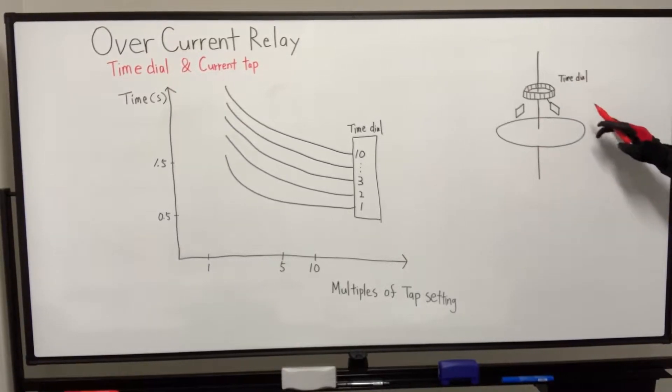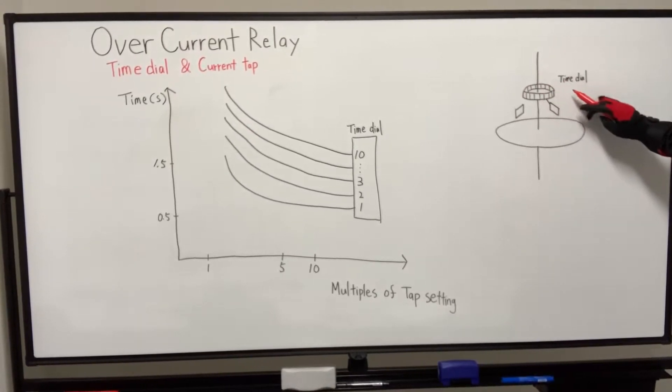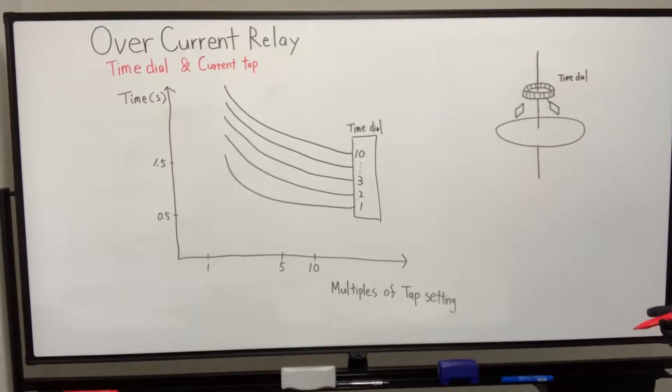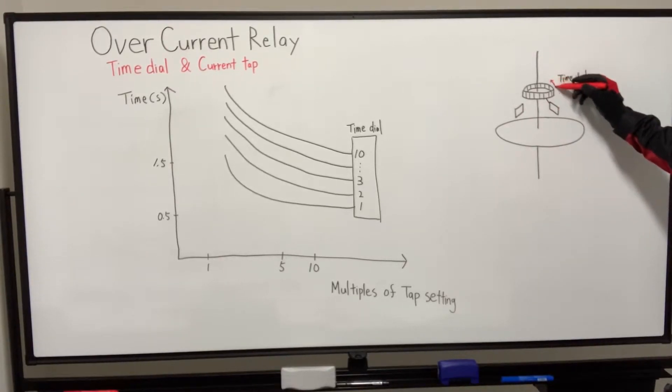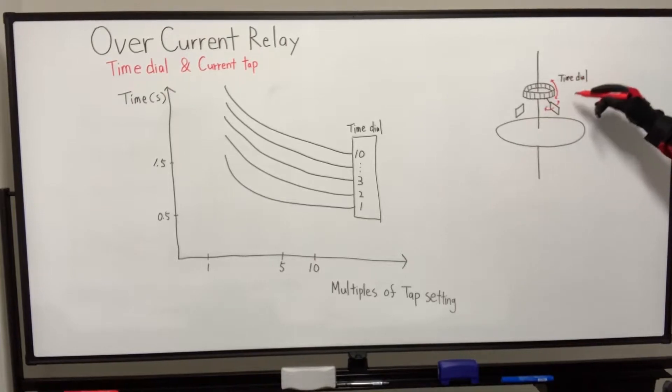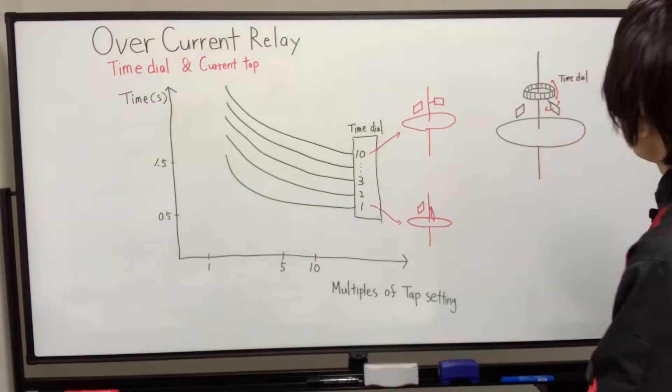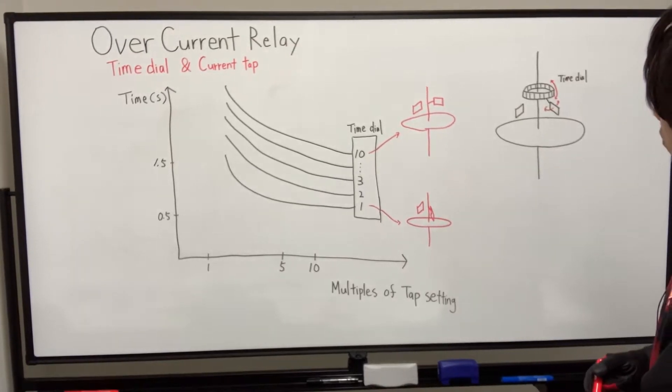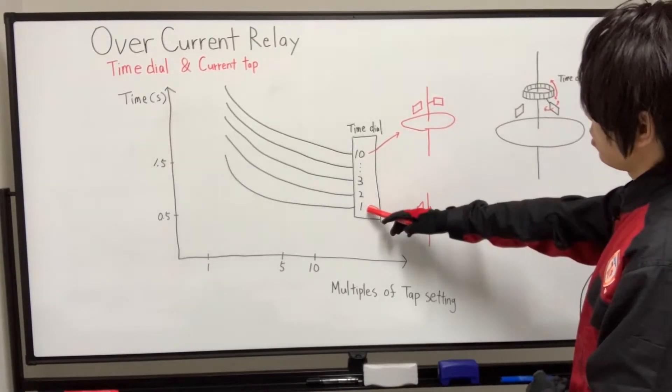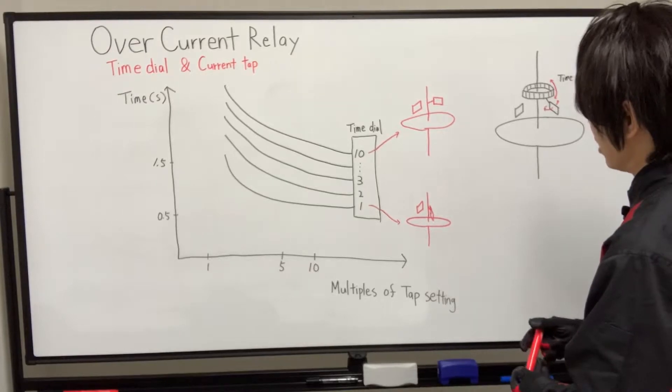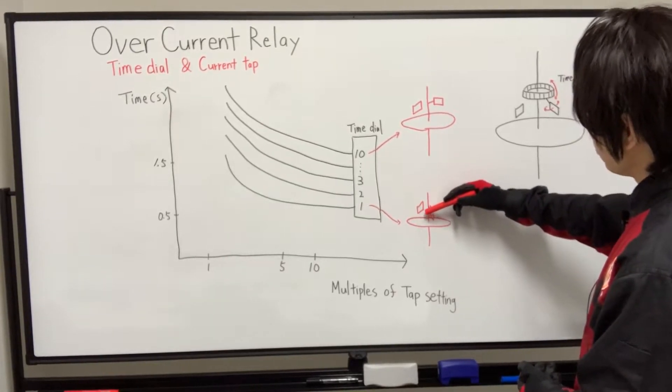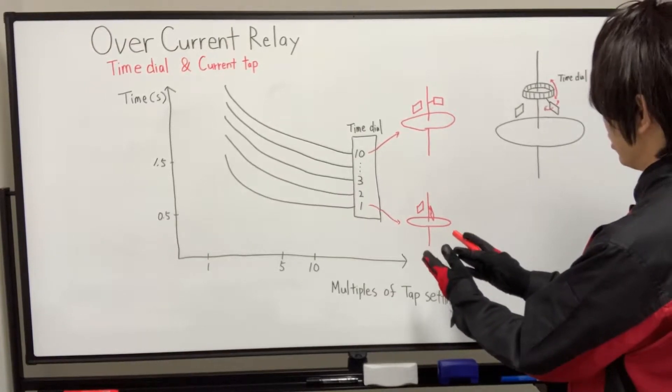This diagram represents the construction of the relay, and here is the time dial. What this actually does is change the distance between fixed and moving contact. So with the dial, we can adjust the distance here to the moving contact. As shown in this family of curves, if the time dial is set to number 1, it indicates the shortest operating time - the fixed and moving contact distance is very close.